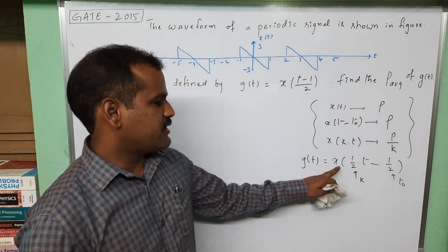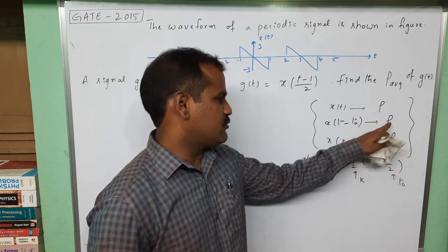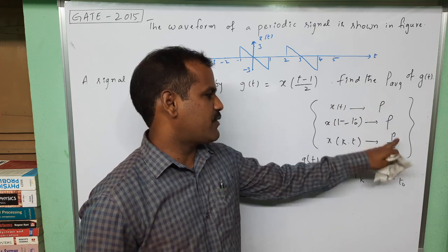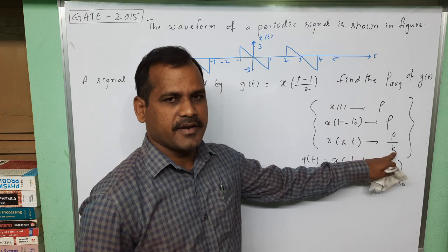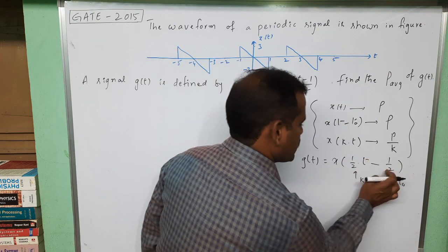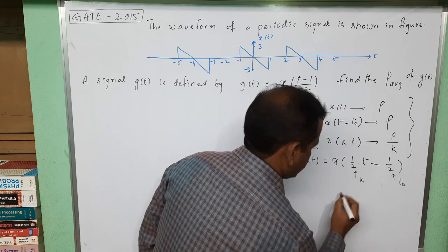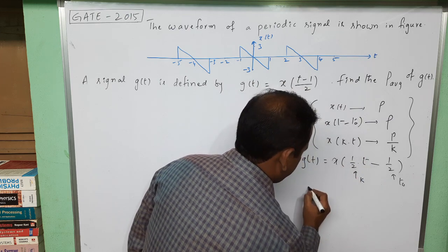Whenever signal x(t) is shifted there is no change in power. If signal is scaled by k then the original power is divided by the scaling constant k. That means this signal total power is nothing but x(1/2 * t) power, which is nothing but g(t) power.